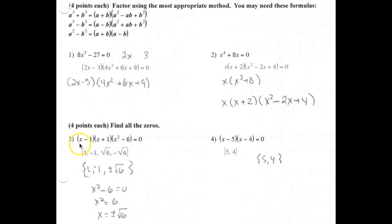So when I set x - 1 equal to 0, that will give me x is equal to 1. When I set x + 1 equal to 0, that will give me x equals -1. And when I set x² - 6 equal to 0, I will get x² is equal to 6. And taking the square root of both sides, I'll get x is equal to ±√6. So these are my four zeros.